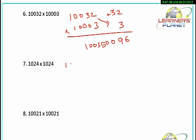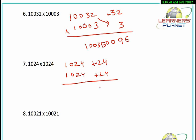Now in this example, 1024 into 1024: it's plus 24 from 1000, and also plus 24 from 1000. What is 24 squared? That is 576. We want three digits and we are getting them, so we write it as it is. Then 1024 plus 24 is 1048.